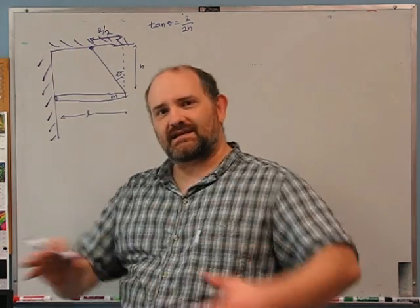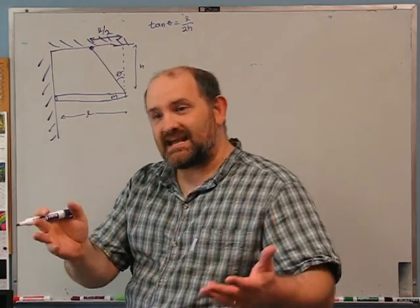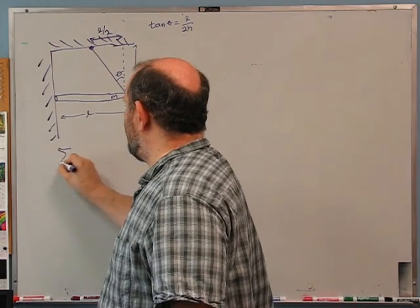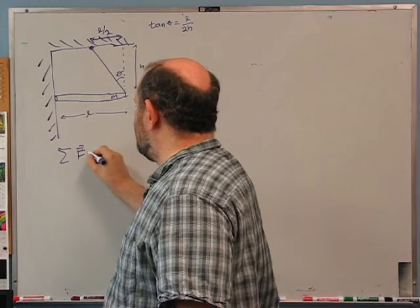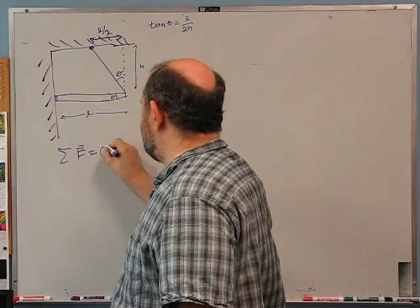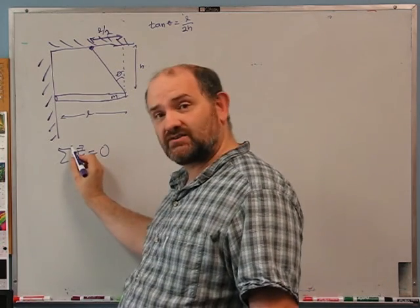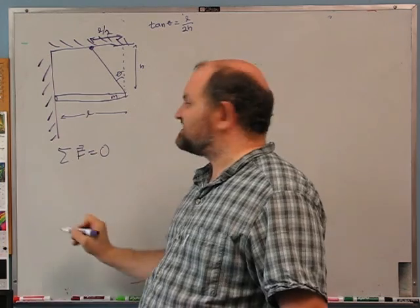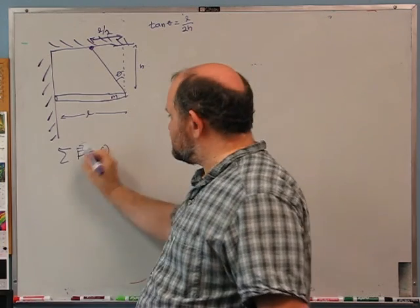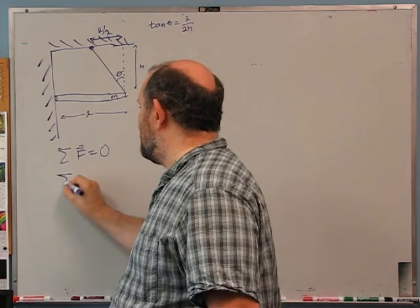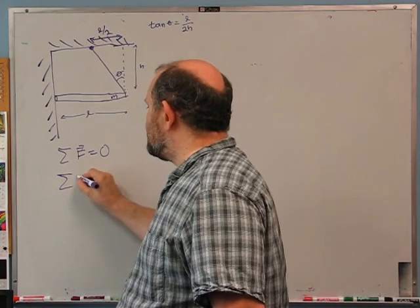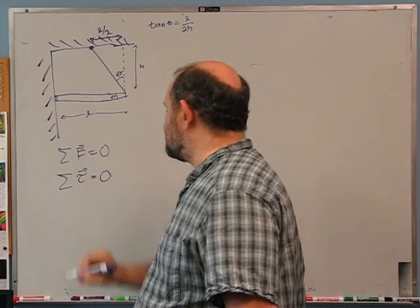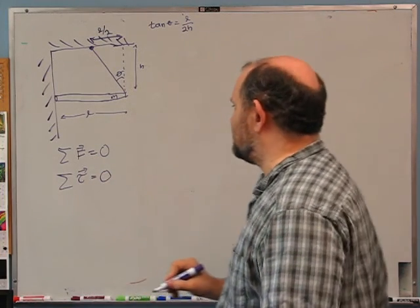It is at rest, it is staying at rest. Therefore, if we look just at the rod, we know that the sum of forces on the rod has to be zero. This is the capital Greek letter sigma — in math it means sum. So this just says the sum of all the forces on the rod is zero. Also, it's not spinning and it stays not spinning, so the sum of the torques on the rod has to be zero.